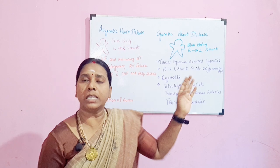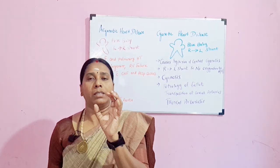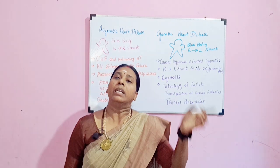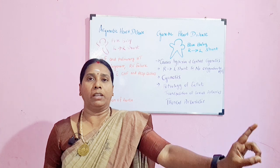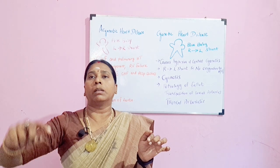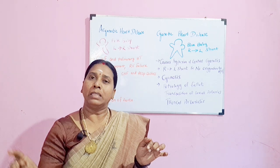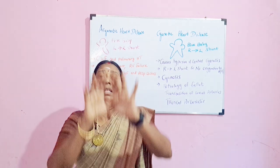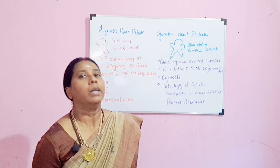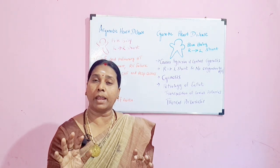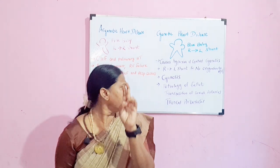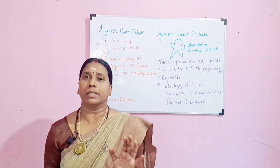In cyanotic heart disease, the baby is a blue baby and the shunt is from the right side to the left side. Deoxygenated blood from the right side enters the left side, goes to the aorta, and then into systemic circulation. When deoxygenated blood circulates throughout the body, the baby becomes blue. The three conditions are tetralogy of Fallot, transposition of the great arteries, and truncus arteriosus.